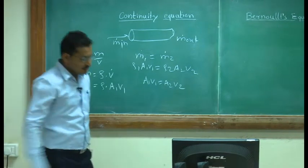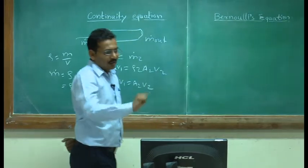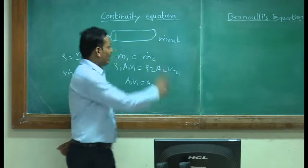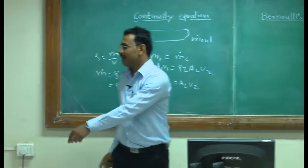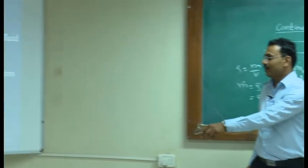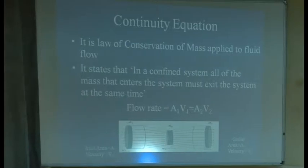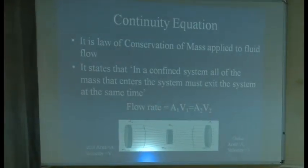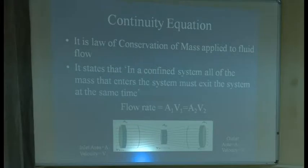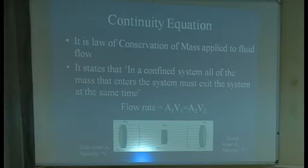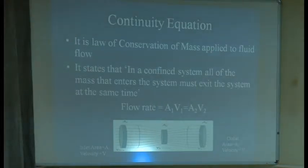This is the continuity equation. We can see from the diagram that whatever the flow rate at the inlet should be at the outlet. Though there is a change in cross-section, flow rate should be constant. So the conclusion is: whenever there is a change in area, if the area is reducing then velocity should increase, and if the area is increasing then velocity should decrease. This is the conclusion from the continuity equation.